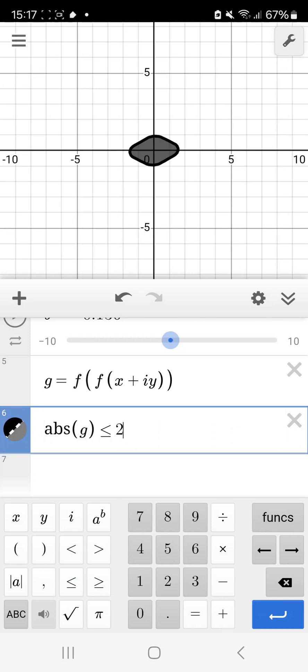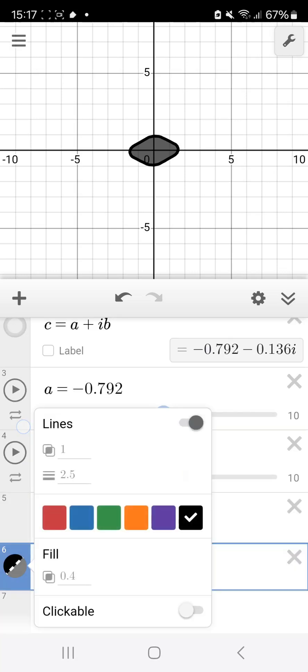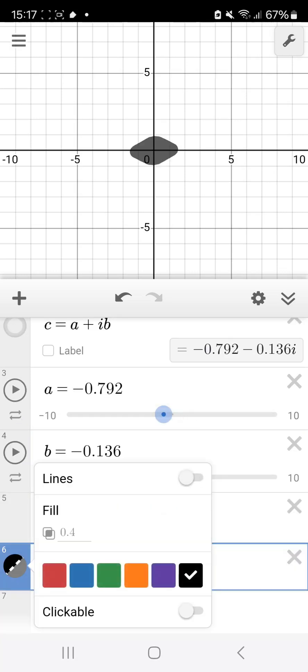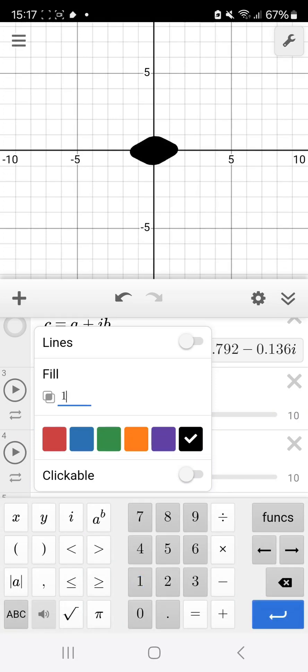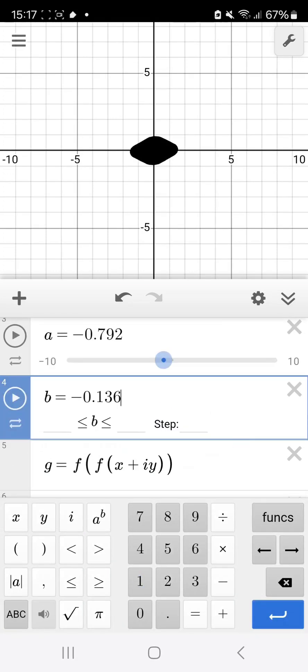Now, as you can see, a simple fractal appears, but we're going to make it more defined. Hold down 6 here. Take away the lines. Use 1 for fill.